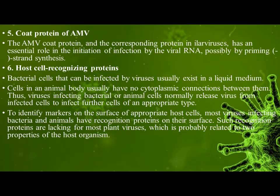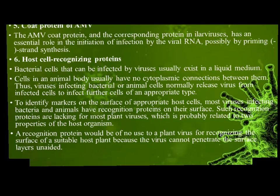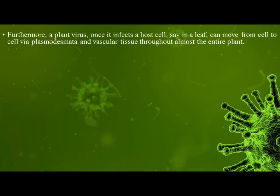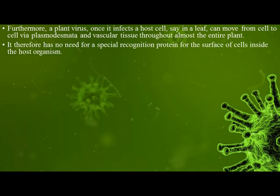Such recognition proteins are lacking for most plant viruses, which is probably related to two properties of the host organism. A recognition protein would be of no use to a plant virus for recognizing the surface of a suitable host plant, because the virus cannot penetrate the surface layers unaided. Furthermore, a plant virus, once it infects a host cell in a leaf, can move from cell to cell via plasmodesmata and vascular tissue throughout almost the entire plant. It therefore has no need for a specific recognition protein for the surface of cells inside the host organism.